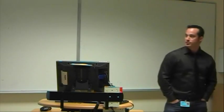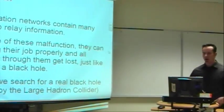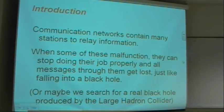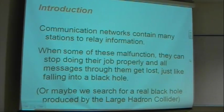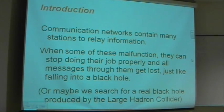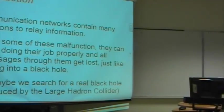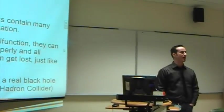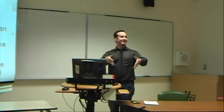Communication networks are normally a set of stations that relay information. They might be network equipment or computers themselves. For instance, this computer is inside a network right now. When some of the equipment malfunction, they can stop transmitting information altogether. They can still receive information, but sometimes they might simply malfunction and stop transmitting, relaying the messages correctly. In this case, messages just get lost, like getting sucked into a black hole. This is what we call a black hole in a network.